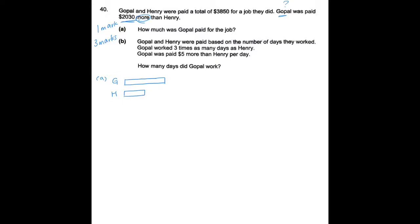Your model must include all the details in the question so that you will understand better. So this part is $2,030. What else does the question tell us? The question also tells us the total, so we can indicate this in our model as well. Ultimately, we are trying to find out how much Gopal was paid, so I will indicate this with a question mark. So if I do my equations, it's pretty simple.